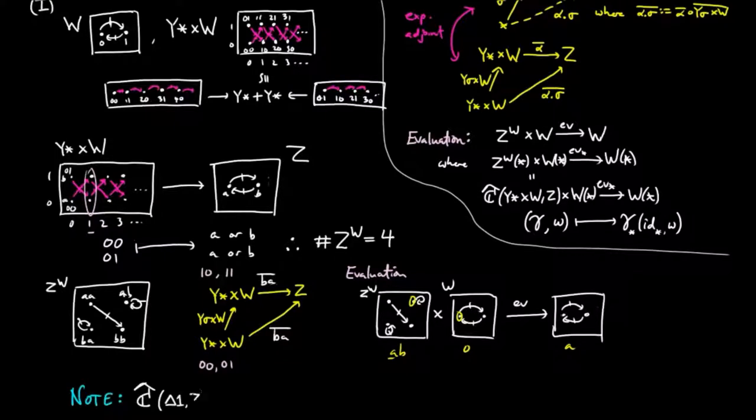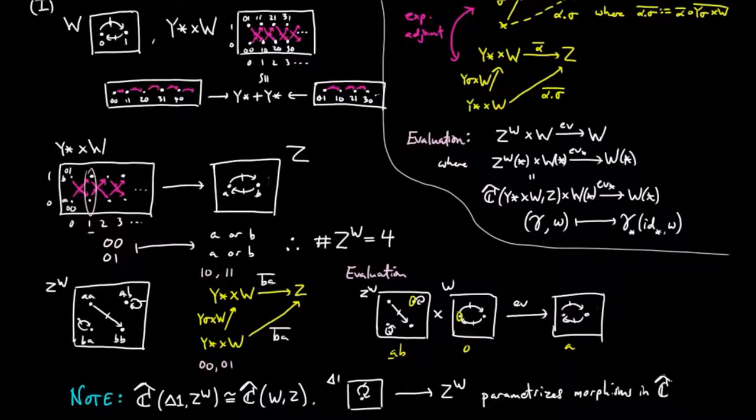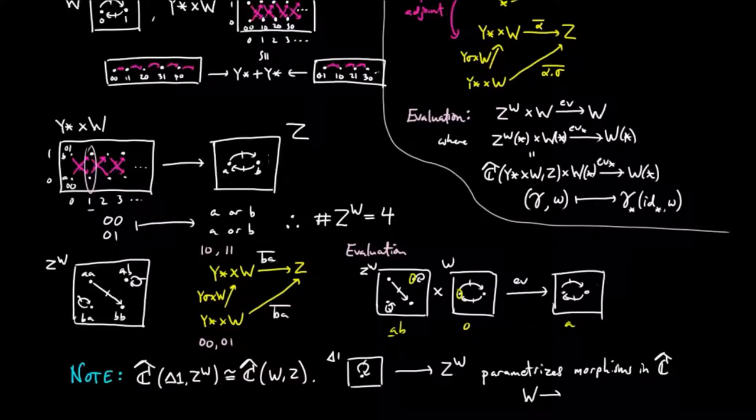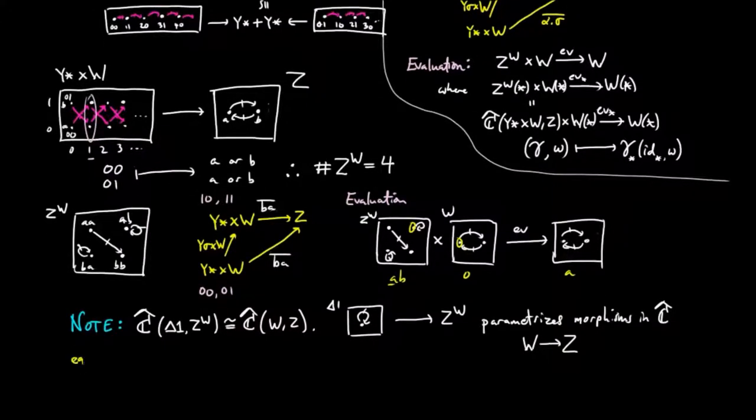Notice that by the exponential adjunction, we have global elements, in other words morphisms from the terminal object to the exponential object Z to the W, is isomorphic to evolving set morphisms from W to Z. Recall that the terminal object in E sets is the container with one figure and the identity process, so a morphism from the terminal object to the exponential object Z to the W is a set of fixed points in the exponential, and characterizes morphisms from W to Z.